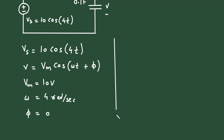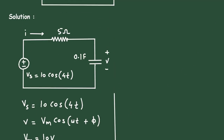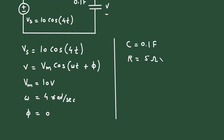Also, the value of capacitance is given, so C = 0.1 Farad. The value of resistance is given, R = 5 Ohm. We have to find current I and the value of V.